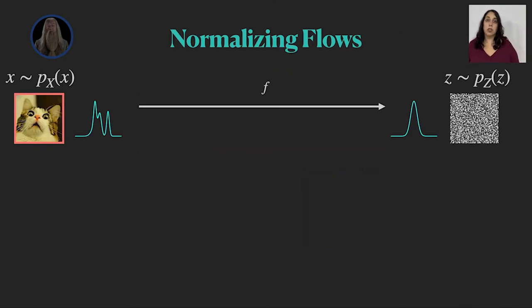So a flow, or a normalizing flow, is a probabilistic tool that takes x from a complex distribution and maps it into z from a simpler distribution using an invertible function, so we can also go back from z to x.